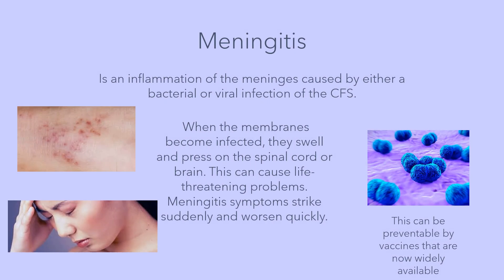Meningitis is not part of the layers of the meninges. It is an inflammation of the meninges which is caused by either bacterial or viral infection of the CSF. When the membranes become infected, they swell and press on the spinal cord or brain, which can cause life-threatening problems. Meningitis symptoms strike suddenly and worsen very quickly. This can be preventable by vaccines that are now widely available.